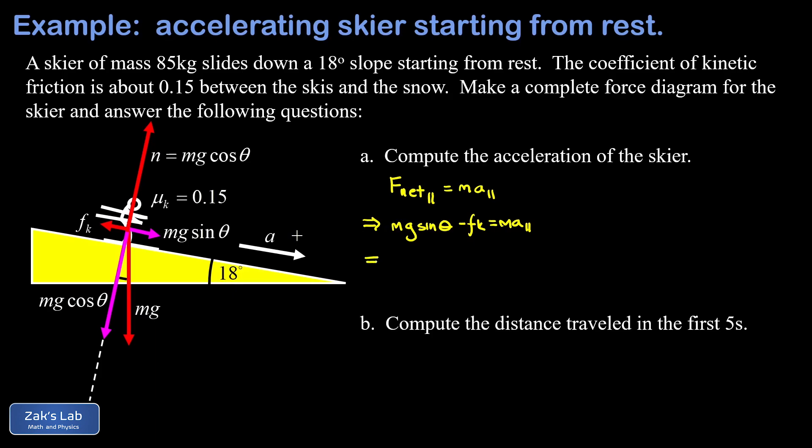Now we'll plug in the fact that kinetic friction force is given by the coefficient of kinetic friction, that's 0.15 in this problem, multiplied by the normal force, that's mg cosine theta. By keeping our problem symbolic from the very beginning, we're able to see that the mass cancels out of the equation. This means all skiers are going to accelerate down this slope with the same rate. We've isolated a parallel already, and we get a parallel equals g times the quantity sine theta minus mu k cosine theta.